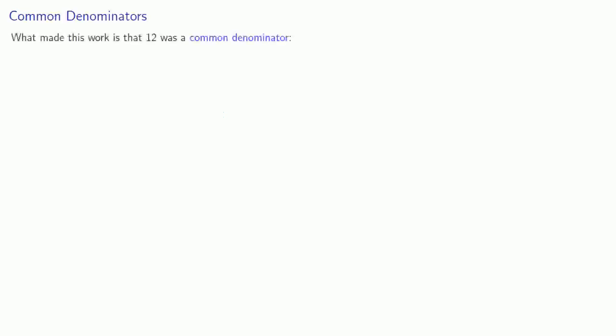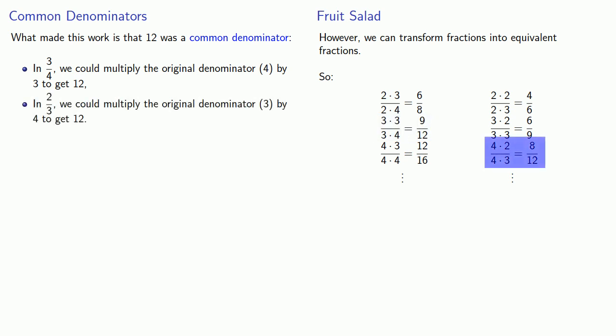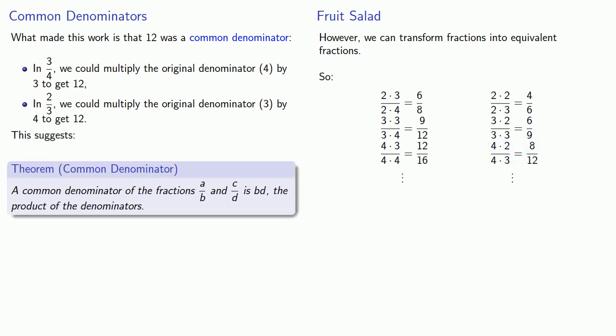What made this work is that 12 was a common denominator. In our fraction 3 fourths, we can multiply the original denominator 4 by 3 to get 12. And in the fraction 2 thirds, we can multiply the original denominator 3 by 4 to get 12. And this suggests a useful idea. A common denominator of the fractions a over b and c over d is bd, the product of the denominators.